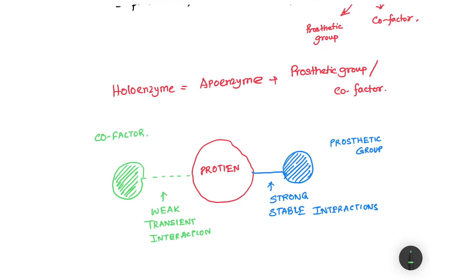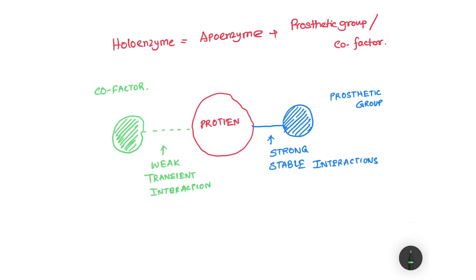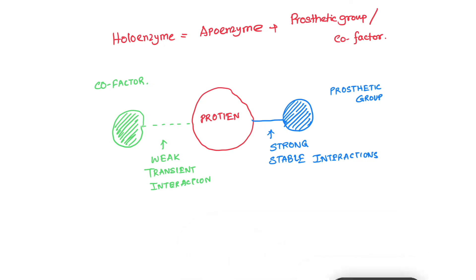Now prosthetic groups can be different organic as well as metallic components, but cofactors are mostly metals. If we have a metal as a prosthetic group, then the metal prosthetic group containing holoenzyme will be known as a metalloenzyme.